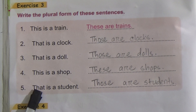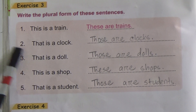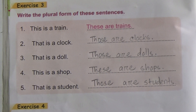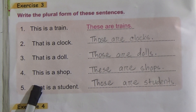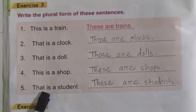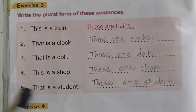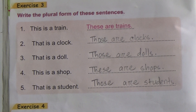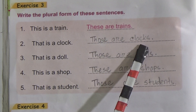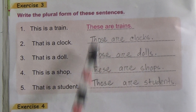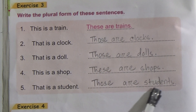Number 5: That is a student. So you will get 'that' in number 2, number 3, and number 5. 'That's' plural form is 'those', and 'is' its plural form is 'are'. So the answer would be 'those are students'. Those are students. Let me tell the answers again: These are trains. Those are clocks. Those are dolls. These are shops. Those are students.